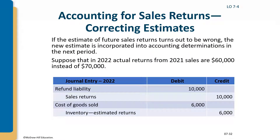If the estimate of future returns turns out to be wrong, the new estimate is incorporated in the next period. Suppose in 2022 actual returns from those sales are only $60,000: debit refund liability $60,000, credit cash for the value of items returned. Debit inventory $36,000 (60% × $60,000) and credit inventory estimated returns $36,000.